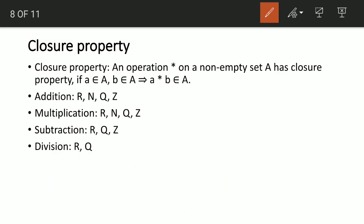We have several operations in mathematics, but here I quickly wrote just four: addition, subtraction, multiplication, and division. Addition is always closed under real numbers, natural numbers, rational numbers, and integers. Let me explain what these number types mean.